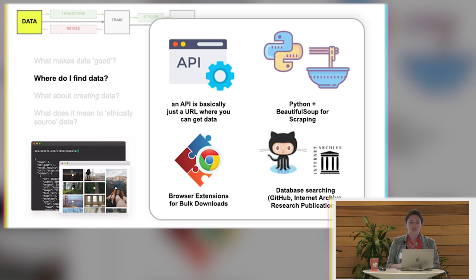There are also a ton of browser extensions for bulk downloads. And so that can be another way of a no code way, notably, of getting a whole bunch of images from a website. And then also database searching. So GitHub, the Internet Archive, research publications, just have an incredible wealth of information that's really useful.